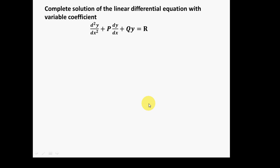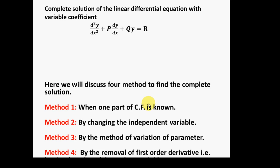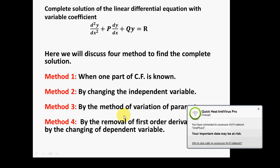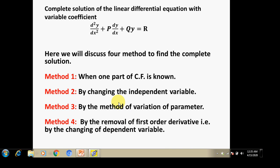The complete solution of this linear differential equation with variable coefficients can be found by four methods: when one part of the complementary function is known, by changing the independent variable, by the method of variation of parameters, and by the removal of the first order derivative. In this video lecture, we will discuss the method of variation of parameters. Other methods have been discussed in previous video lectures.